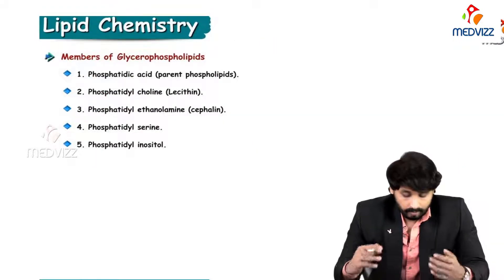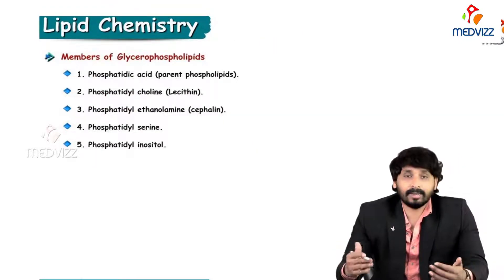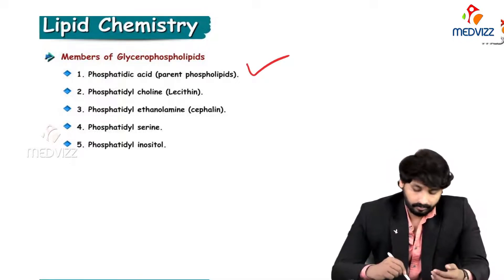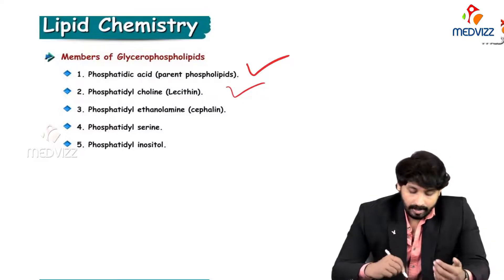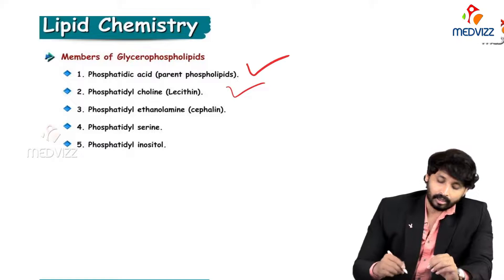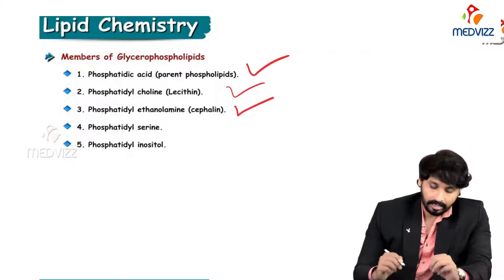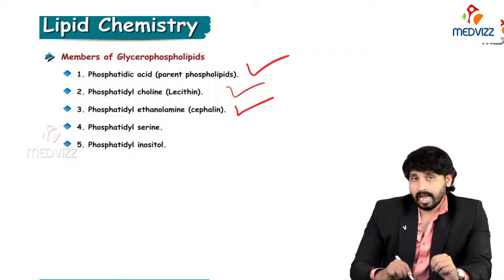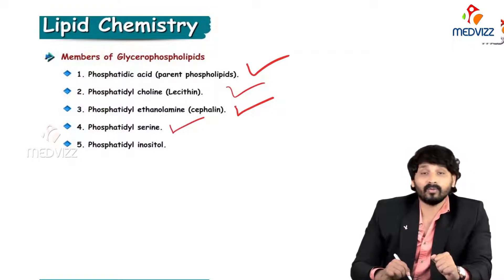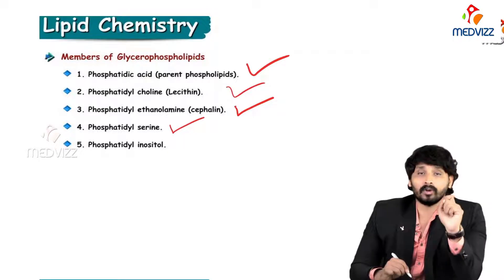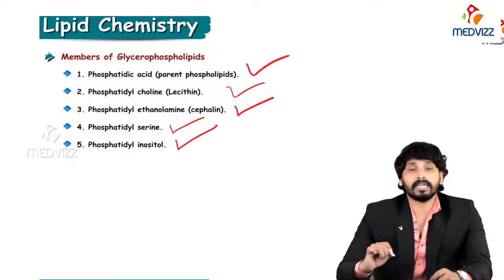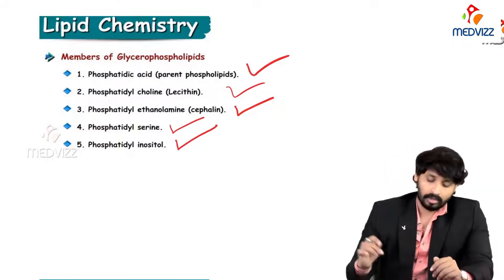The members of glycerophospholipids include: phosphatidic acid, phosphatidyl choline (otherwise known as lecithin), and phosphatidyl ethanolamine (otherwise known as cephalin). If the amino acid serine is attached to the glycerophospholipid, it is known as phosphatidyl serine. If the carbohydrate inositol is attached to the glycerophospholipid, it is named phosphatidyl inositol.